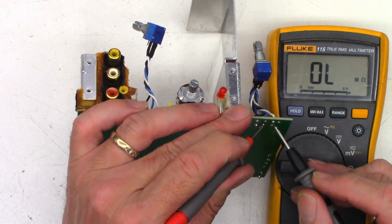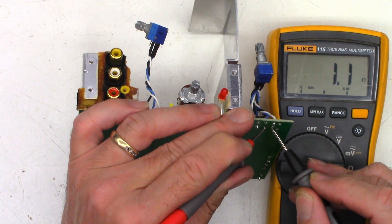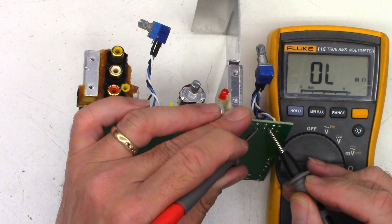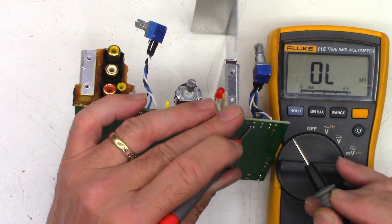Let's turn it up all the way now. Volume maximum. These two should be shorted now. Yes. Yes. And I should see close to 5K here. Yes. Perfect. Let's get it back together now and make sure it works.